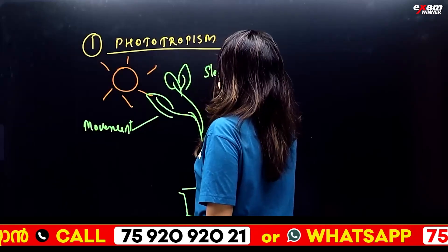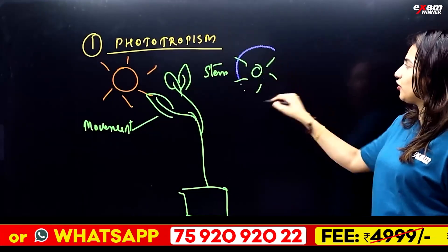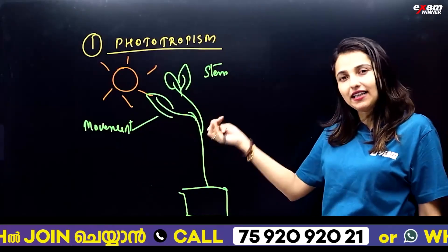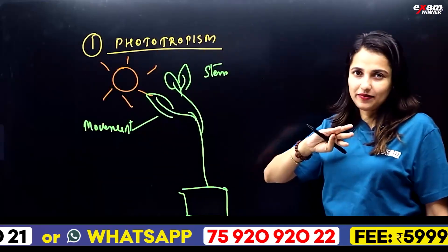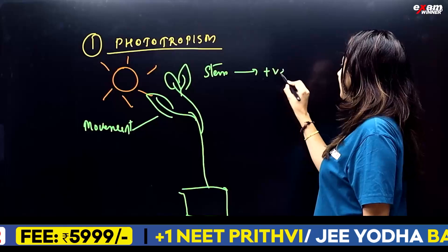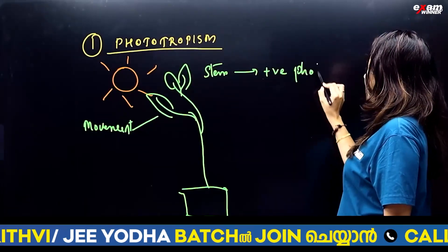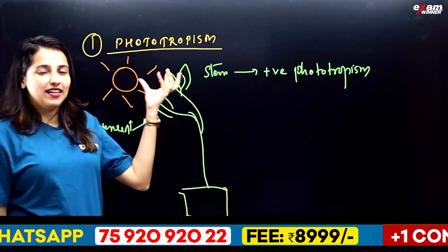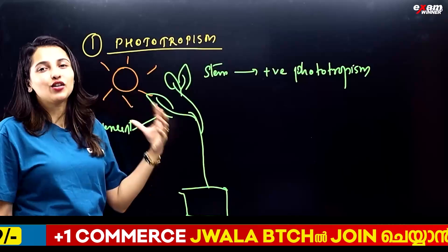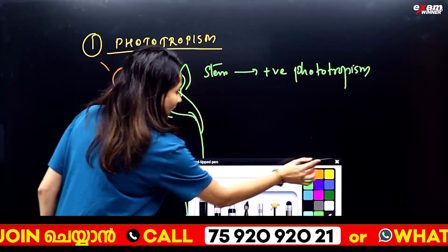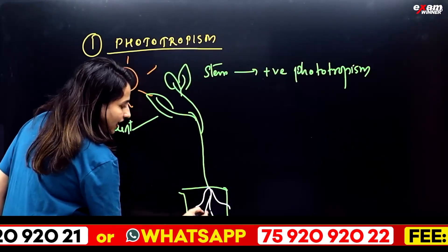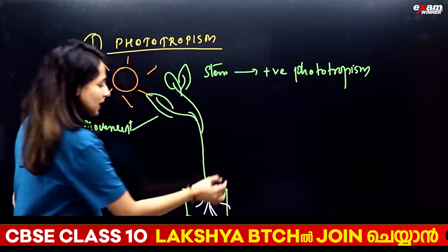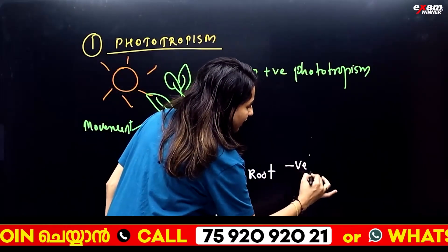So how we call the stem? Phototropism — the stem moves towards the light, so we call it positive phototropism: stem moves in the same direction as the stimuli. But if we look at the root, it goes in the opposite direction. Then we say that the root is negatively phototropic.